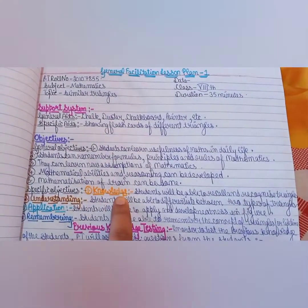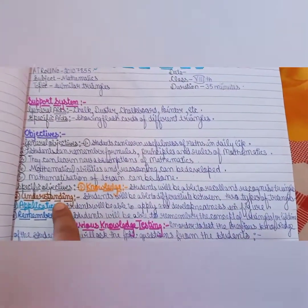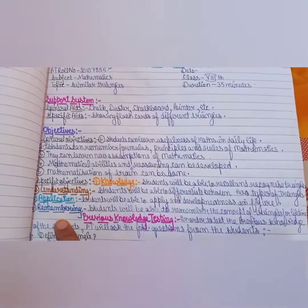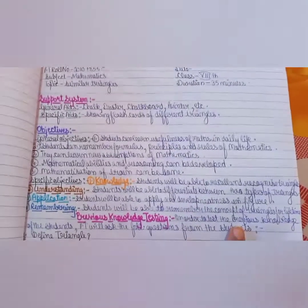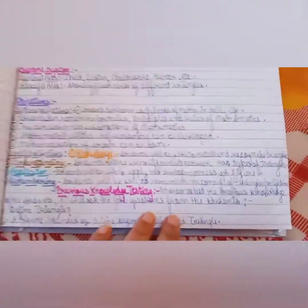Next is Knowledge: What did the children get the knowledge? Understanding: What did the children understand this topic? Application: Where did the children apply this topic? Remembering: The children will remember it for a lifetime.